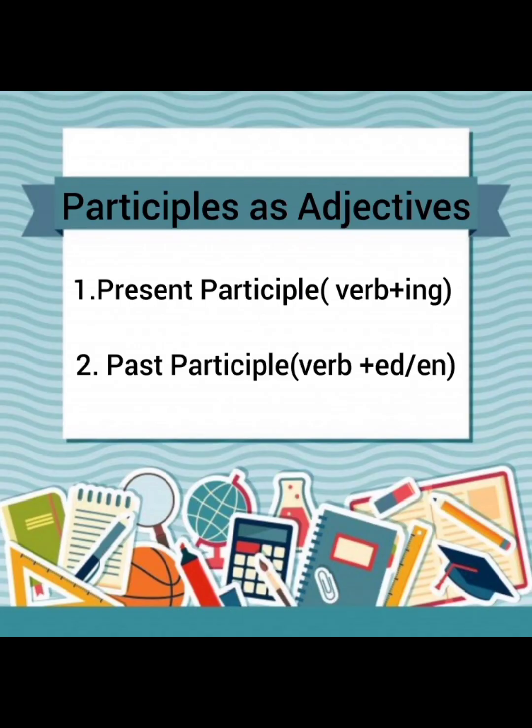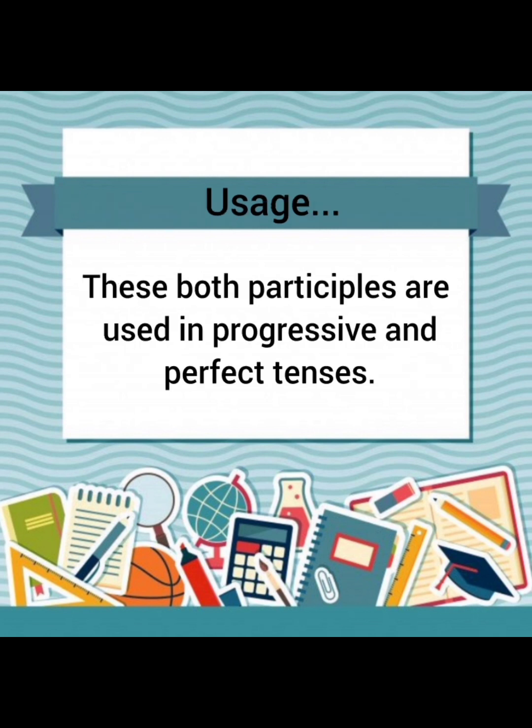Number one is present participle, that is formed with the help of verb plus -ing, and number two is past participle, that is formed of verb plus -ed or -en. These both participles are used in different tenses — in the progressive tense and also in the perfect tenses.